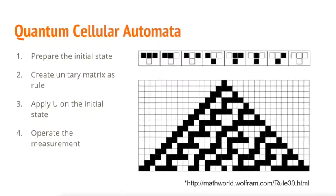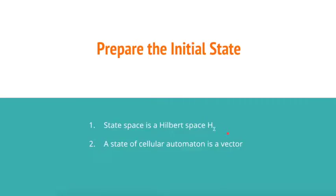Similar to classical model, first we are going to prepare our initial state. And then, we create a unitary matrix as the rule and apply the unitary matrix on the initial state that we prepared. And in the end, different from classical model, we are going to operate a measurement on the new generations we get. But first, we are going to prepare the initial state of quantum cellular automata.